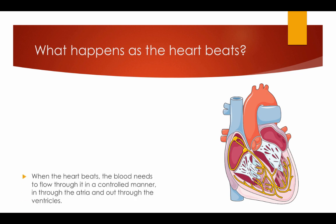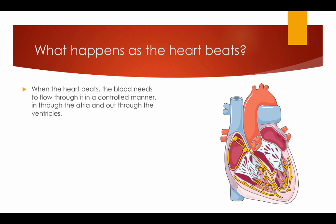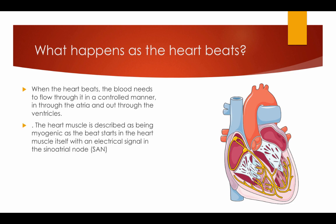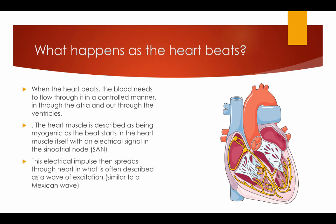What happens as the heart beats? When the heart beats, the blood needs to flow through it in a controlled manner — in through the atria and out through the ventricles. The heart muscle is described as being myogenic, as the beat starts in the heart muscle itself with an electrical signal from the sinoatrial node, also known as the SA node. The electrical impulse then spreads through the heart in a wave of excitation, similar to a Mexican wave.